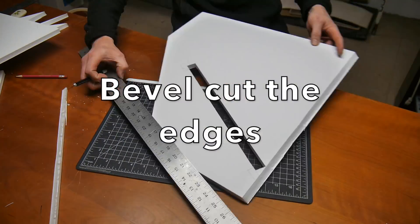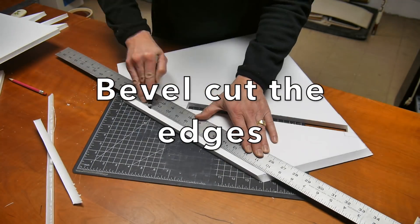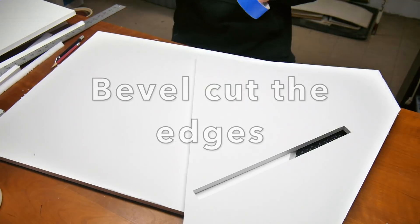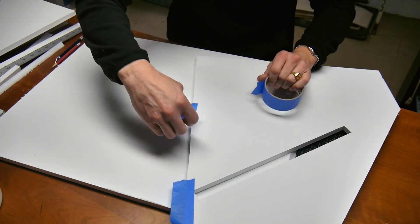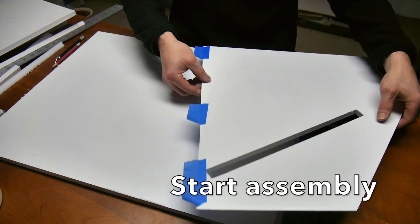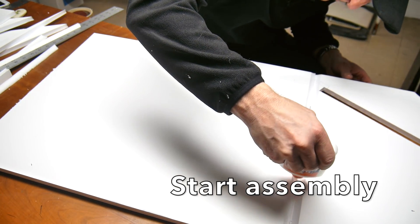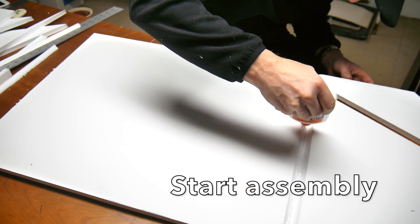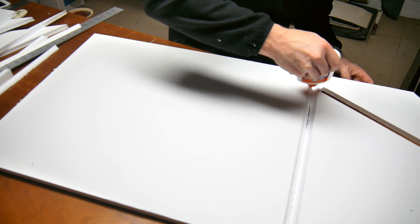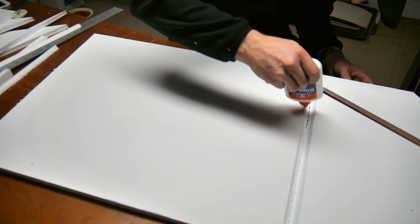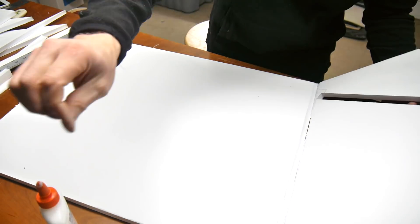So just like in all the other foam core videos that I make, we're going to bevel all the edges and glue everything together. That's going to give us a really nice edge with no visible foam, and we're going to use the exact same techniques. So if you haven't seen the other foam core building videos, go back and watch those.